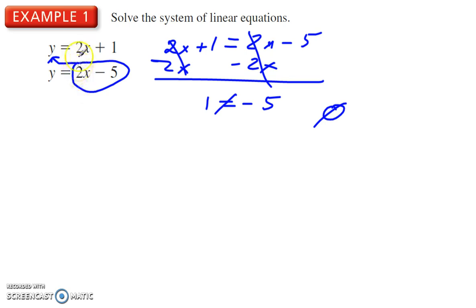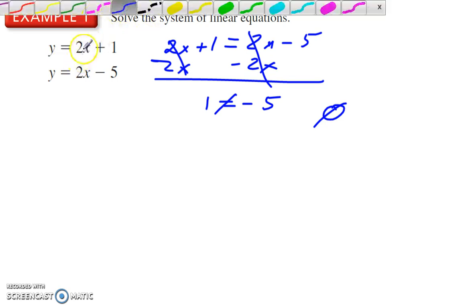What that means is these two will never cross. There is no coordinate that these two have in common. If you look at them, even before we started solving this, these are in slope-intercept form. What you notice here: